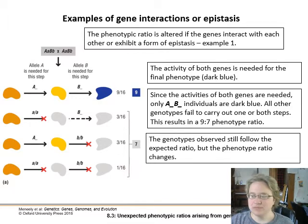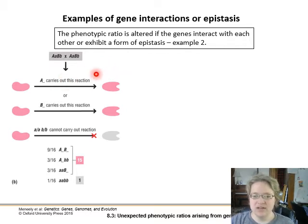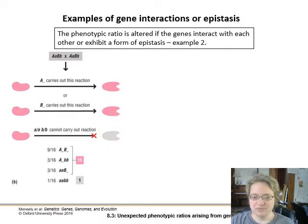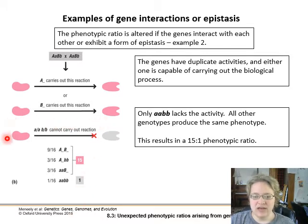Here's another type of epistasis where two different genes can both carry out the same type of reaction. We'll call this the U compound. The functional allele of the A gene can carry out this reaction — it can make U into C. We also have the B gene, and if we have a functional dominant copy of the B enzyme, it will carry out the same thing, turning U into C. So we have duplicate activities.